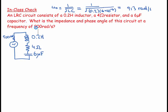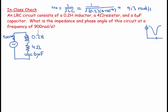I want to find the impedance and phase angle at 900 radians per second. Looking at the impedance plot, resonance occurs at minimum impedance. I've moved slightly off resonance to one side.